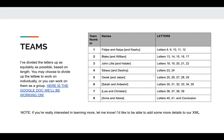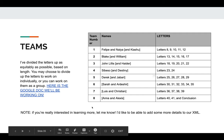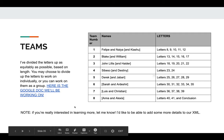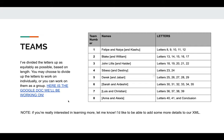You can choose to divide up the letters you want to work on individually, or work on them together as a group. For instance, Felipe could work on letter eight, Naya could work on nine, Kyashu could work on ten, and then all members of the group work on eleven and twelve together. You can make an executive decision amongst your group on how to handle that. If you're interested in learning more, let me know — I'd like to add some more details to our XML.